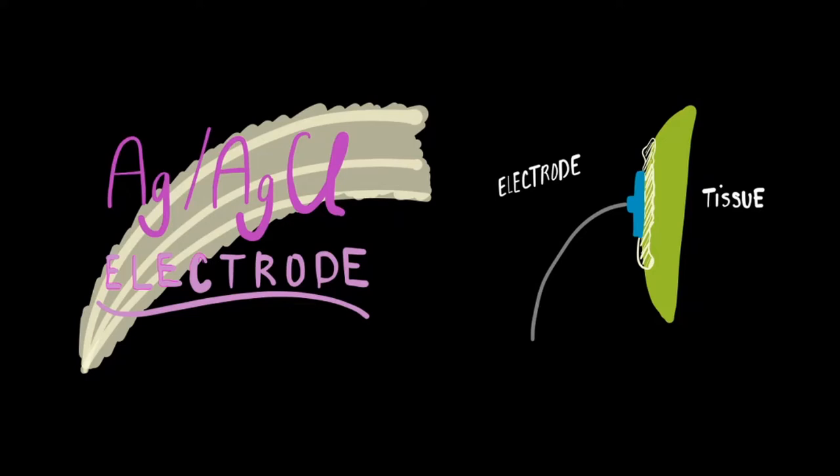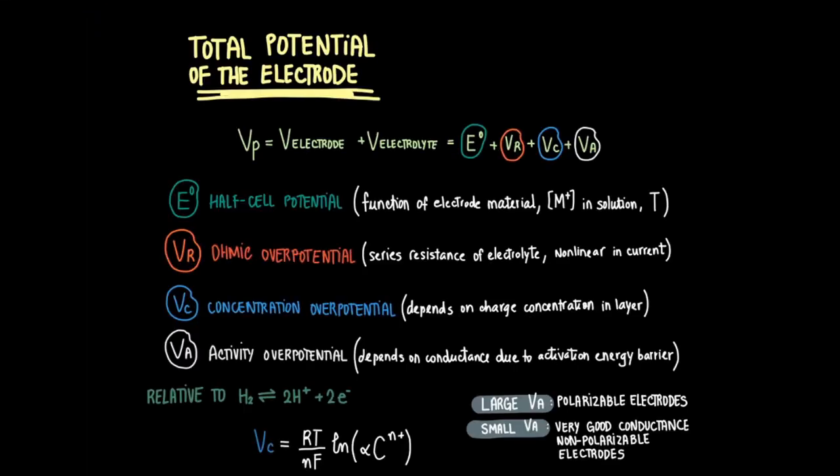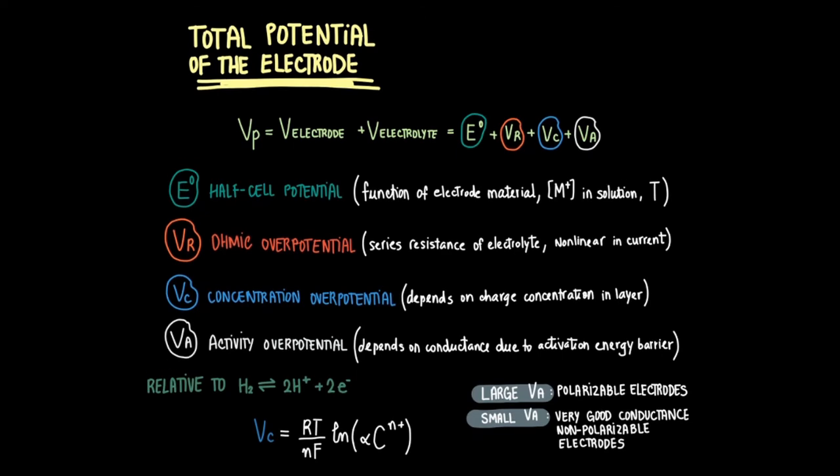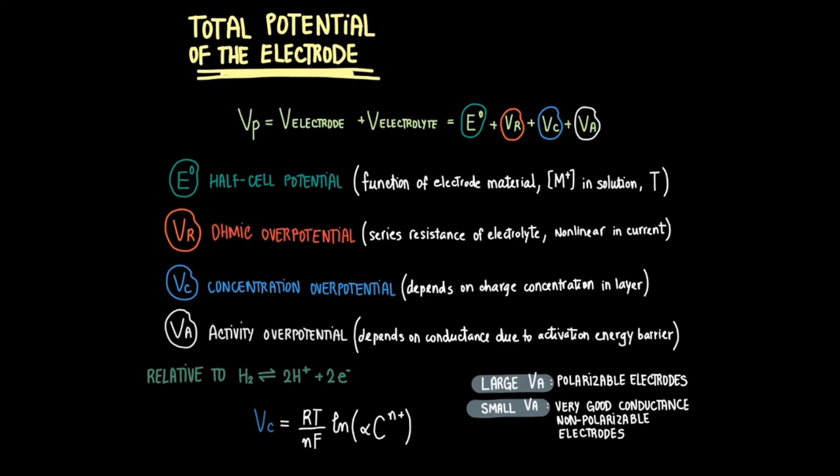An electrode represented here in blue with a gray cable usually comes in contact with a tissue which has been wetted with a gel. In our previous video we discussed how the calculation of the electrode potential is done by adding the half cell potential and the ohmic, the concentration, and the activity over potentials. These different aspects of the electrode system can be represented by different elements in a circuit model.